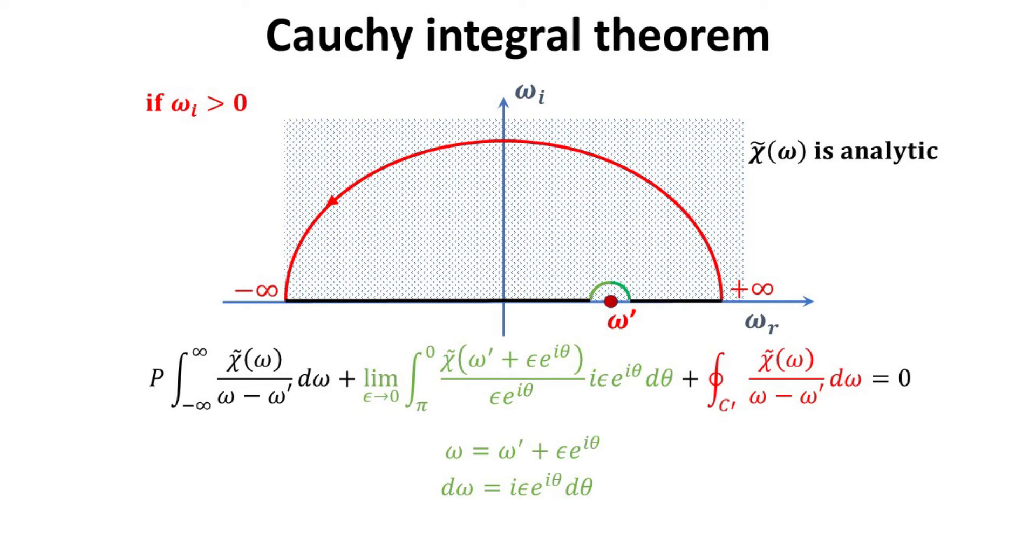Finally, we have the red contour C prime, which joins the two ends of the black lines at infinity. Here we assume that the physical response function, chi tilde, vanishes as omega goes to infinity. Thus, the integration over C prime contributes nothing as it recedes to infinity.